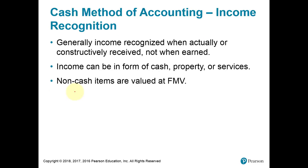Now let's talk about accounting methods. What you learned in prior accounting classes is the accrual basis method of accounting, but for individuals and most small businesses we use the cash method — also called the cash receipts and disbursements method — where we report income when it is received, not necessarily when it was earned. For example, as a state employee paid twice a month, if I work the last days of a month but don't get paid until the fifth of the next month, I report that income when I receive it, not when I earned it.